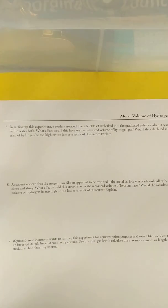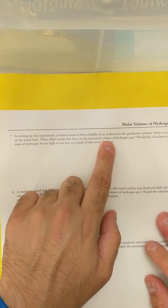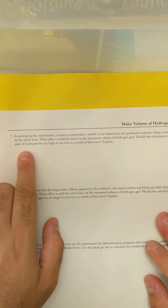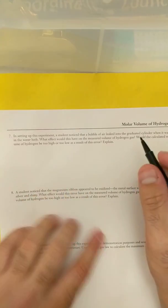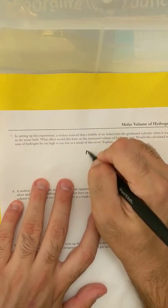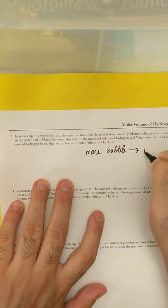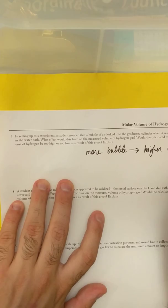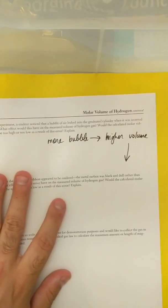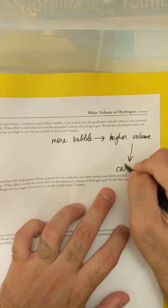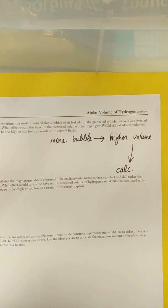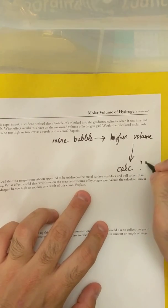And then it says, in setting up the experiment, a student noticed that a bubble of air leaked into the graduated cylinder when it was inverted in the water bath. What effect would this have? I'm going to leave it up to you, but if I have more bubble, that would mean I have a higher volume. Now, if I have a higher volume, I want you to calculate. So I'll do a sample calculation with the higher volume. What's going to happen? I'm going to leave that up to you.